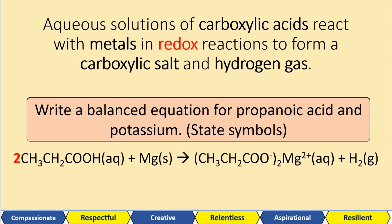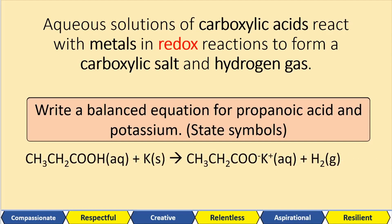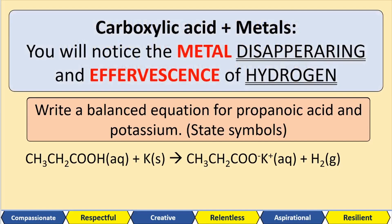Potassium is in group one, so we don't need two moles of our acid. It's one mole of the acid reacting with one mole of the metal to give us one mole of the salt and one mole of hydrogen gas. When we add carboxylic acids with metals, we notice two things: the metal disappearing, and effervescence of hydrogen gas.